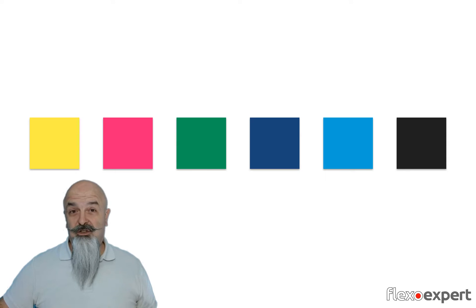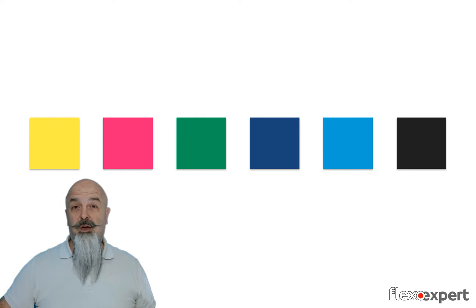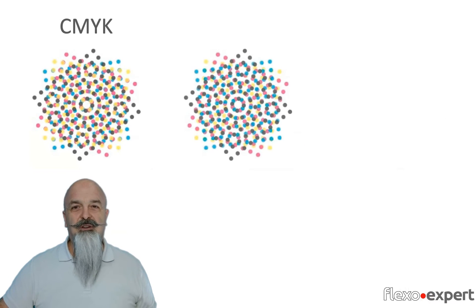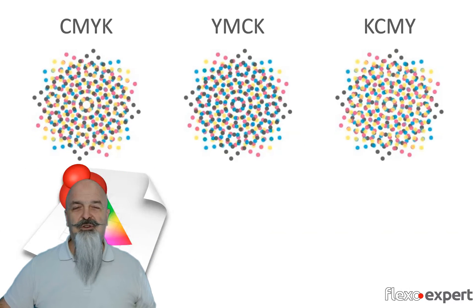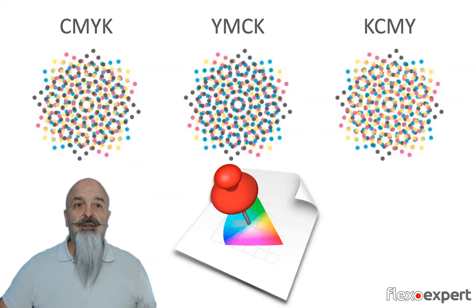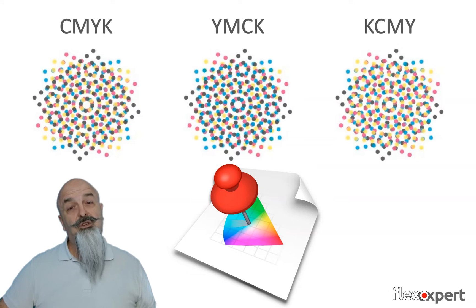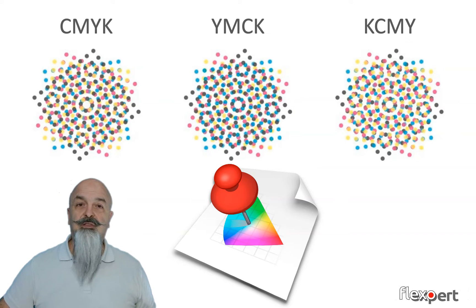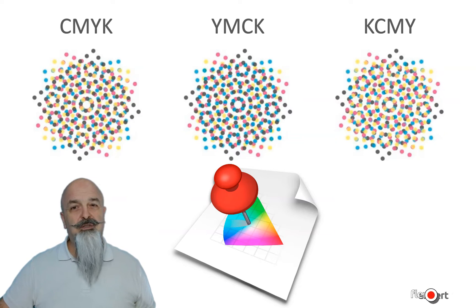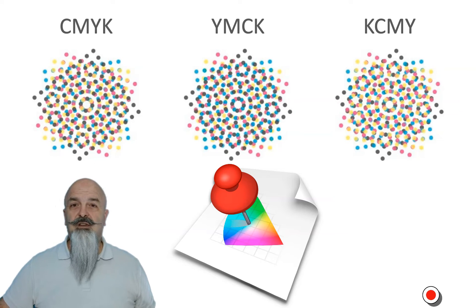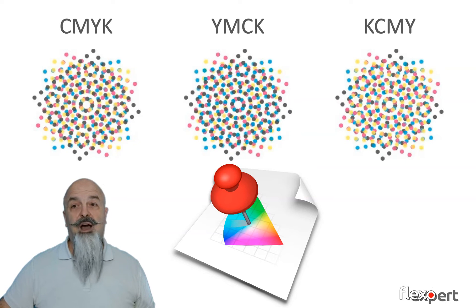We shall not change the sequence of inks once we have determined our printing condition. The effect of color reproduction obtained from our printing condition is described in numbers, typically in one ICC color profile. The color profile therefore describes how our printing system reproduces colors in that printing condition — that's why we also call it output intent. If we change the printing sequence of our inks, the printed result will be different from what is described in the ICC profile.